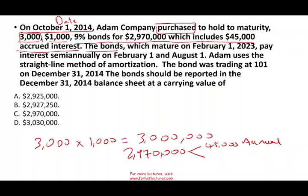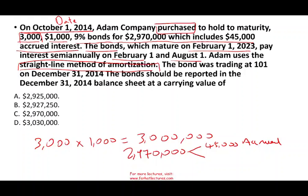The bonds mature February 1st, 2023, and pay semi-annual interest on February 1st and August 1st. That is approximately eight years and four months. On the CPA exam they usually don't give you odd dates, but in my questions I use odd dates to challenge you to pay attention. Adam uses the straight-line method of amortization, so you also need to know the difference between the straight-line method and the effective interest rate method.